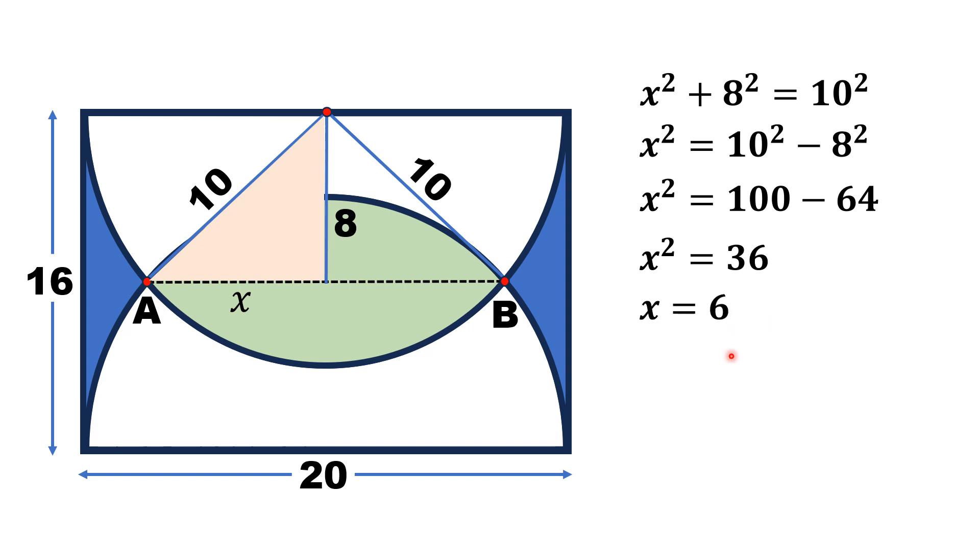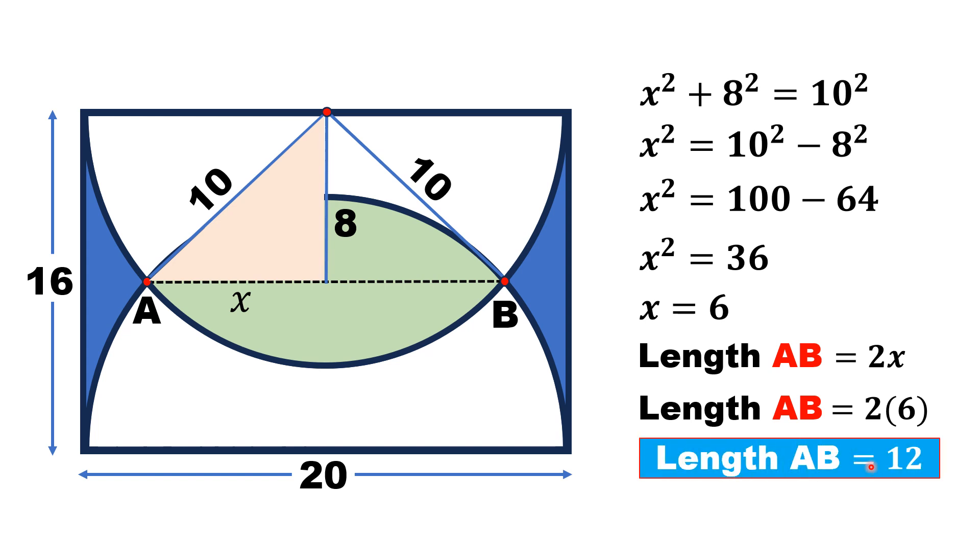Taking square root on both sides, we will have X = 6 units. Now the length AB is exactly twice the length X. So AB = 2X. Substituting X = 6, we will get length AB = 12 units. And that is the answer.